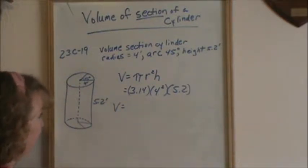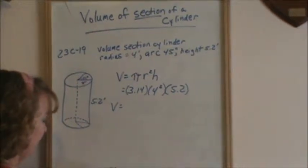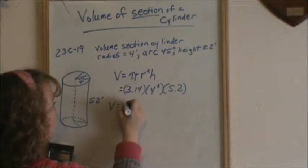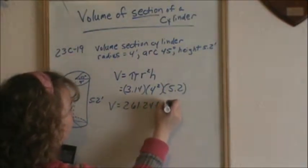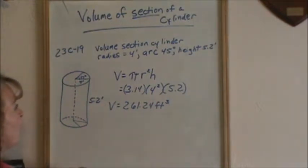We're using 3.14 for pi. So that would be 261.24 cubic feet. That's the volume of the whole can.